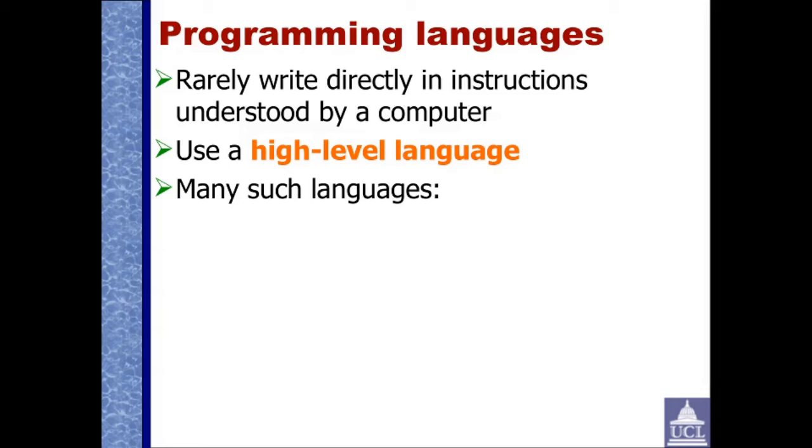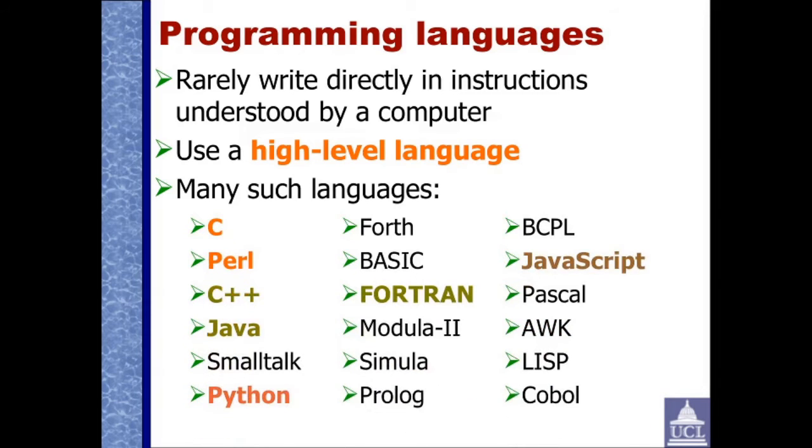Programming languages are used because we rarely write directly in instructions understood by a computer. This used to be done for games programming, but even that now tends to use libraries of routines at that very low level to make it easier to write new games. We use what's called a high level language, and there are many of these. Here's a selection with the most popular ones in bioinformatics shown in Orange: C, Perl, and Python. JavaScript is also very popular but is a specialized language generally just used within web pages. C++ and Java are also popular, and languages like Fortran are popular in areas that have come from chemistry and physics, like molecular dynamics. There are all sorts of other languages, and this is just a very small sample.